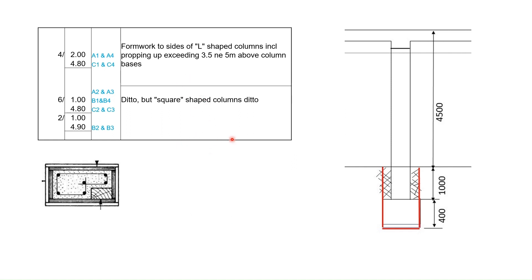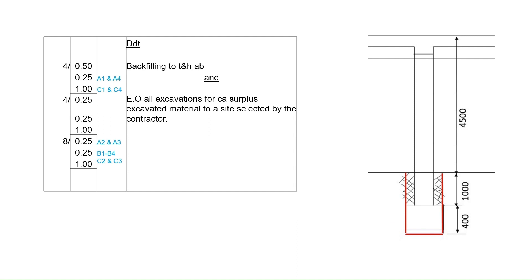The second description pertains to the square-shaped columns. Given that the only difference from the L-shaped columns is their shape, we simplify the description to 'ditto but square-shaped columns.' Our 250 by 250 columns give us 250 multiplied by 4 sides = 1 meter. So we enter 1 meter by 4.8 meters, multiplied by 6 for the perimeter columns. For the internal columns B2 and B3, we enter 1 meter by 4.90 meters, multiplied by 2.